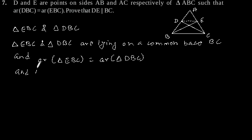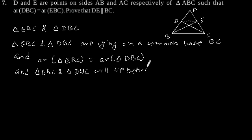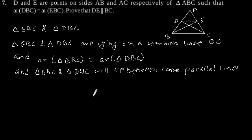Triangle EBC and triangle DBC lie between the same parallel lines. Therefore, we can say that DE is parallel to BC.